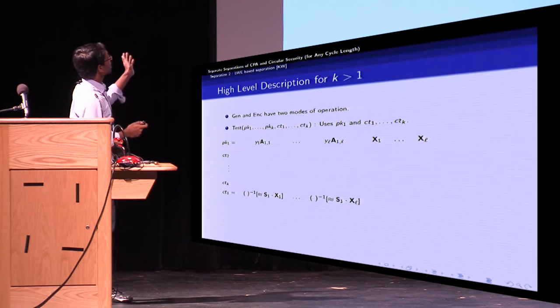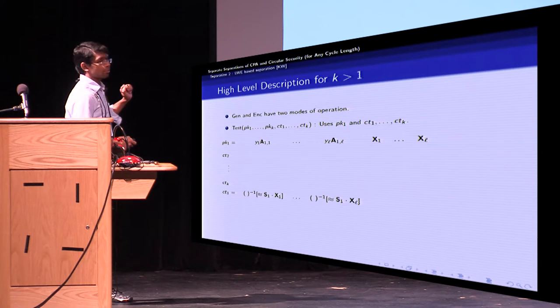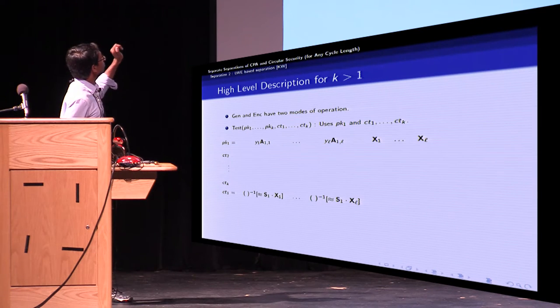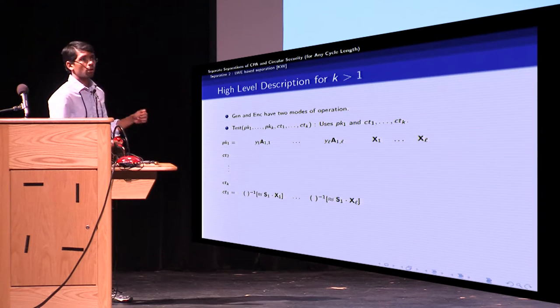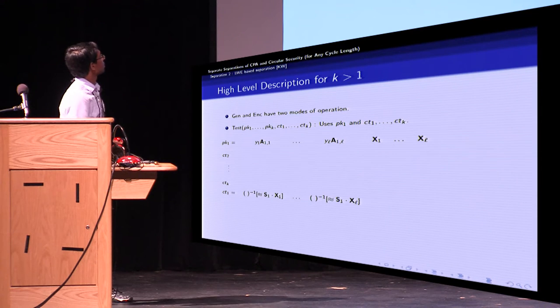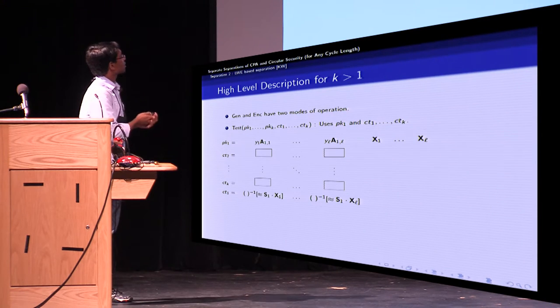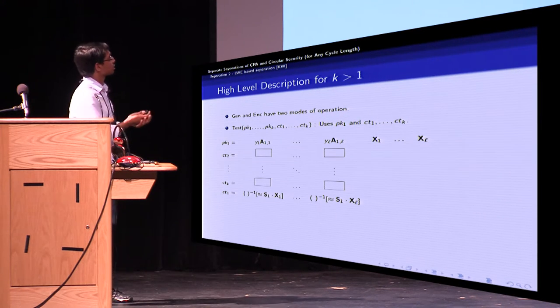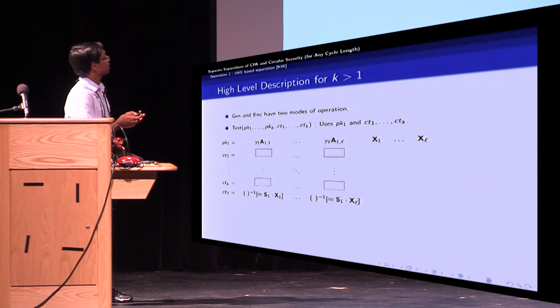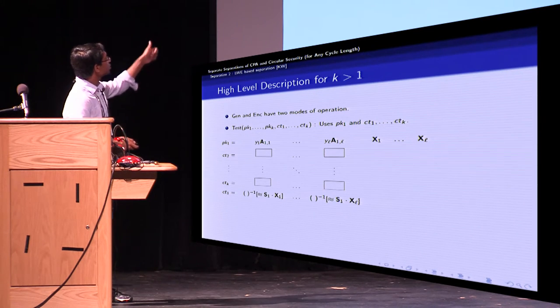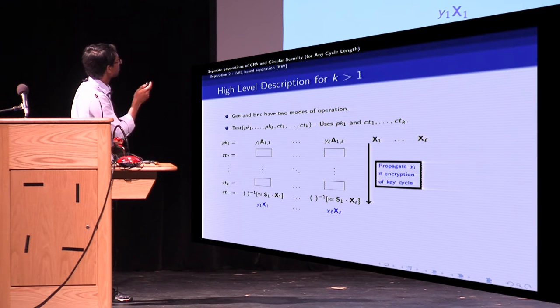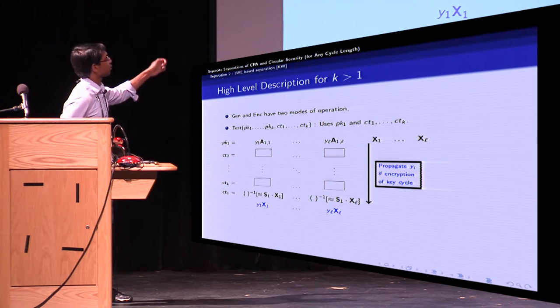So this is what it will look like. And for simplicity, for now, let's assume that the first public key and the first ciphertext are of the form that we've already seen. The remaining ciphertexts are computed in such a manner such that if they form an encryption of the secret key, then if you combine each column, then you get Y_i times X_i for each column.